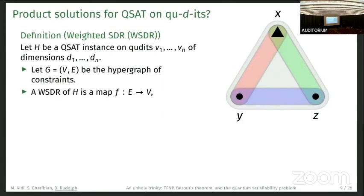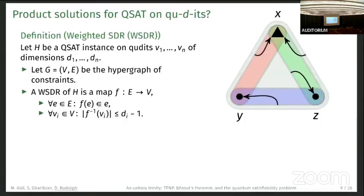We have a different notion, a WSDR. It's a map from edges to vertices. It maps each edge to a vertex inside the edge. What we also demand is that for all vertices, the pre-image here is at most size d_i minus 1. This means for a qubit, we can only map one edge to it, just the same as QSDR. But for a qutrit, we have d equals 3, so we can map two edges to it.